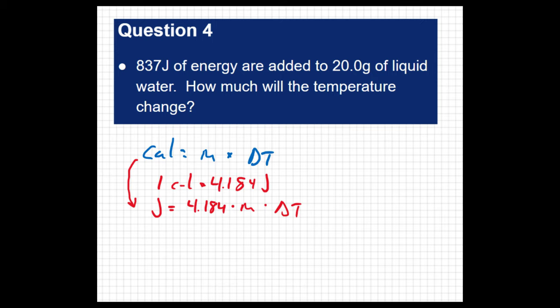Or I would take the number of calories and multiply it by 4.184 in order to get the number of joules. So if I do that in this case, I could take my number of joules, which is 837, set that equal to 4.184 times the mass, which we know to be 20, and that's going to multiply by the change in temperature. So the change in temperature is my only unknown. If I take 4.184 times 20 and then divide that into 837, I get 10 degrees Celsius.